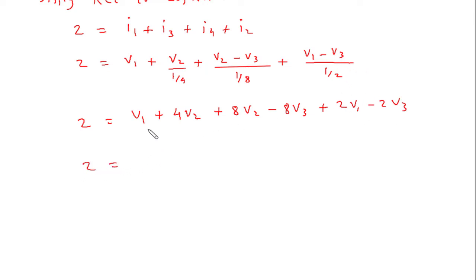So this will be 2 is equal to this will be 1 plus 2, 3V1. Then this 4 plus 8 will be 12, 12 plus 2 will be 14. Actually 4 plus 8 will be 12, so plus 12V2. Then this minus 8 and minus 2 will be minus 10V3. Let's say this is equation number 1.